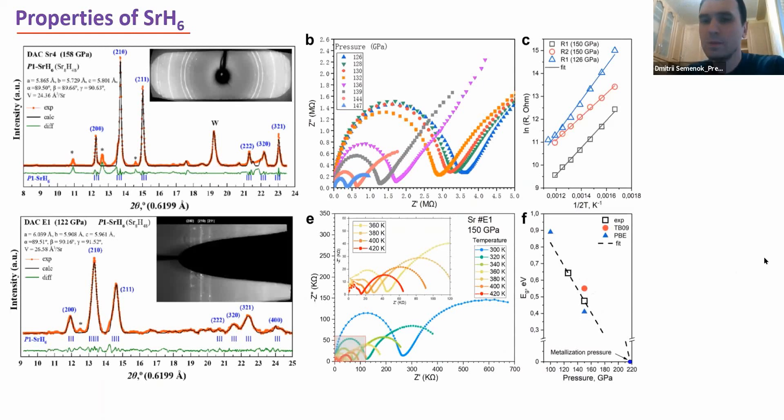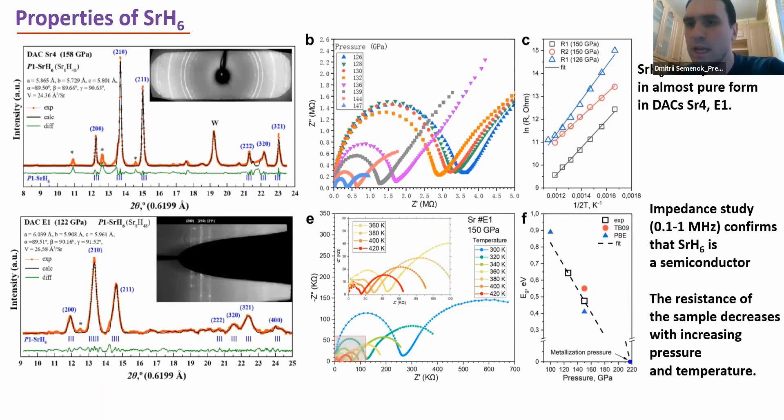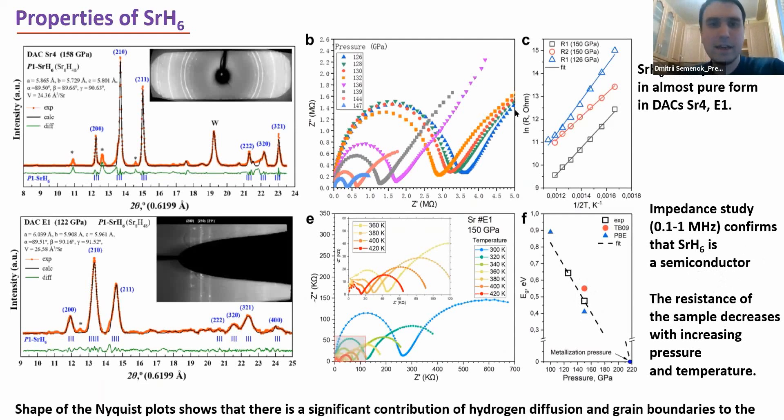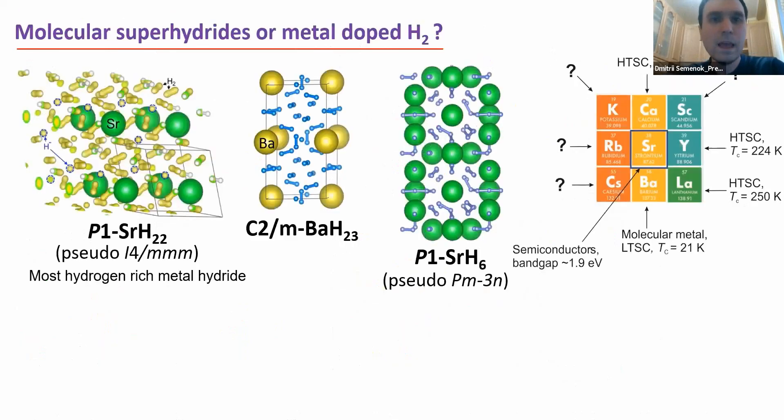The metallization pressure of this compound is about 220 GPa. We synthesized it in pure form. Impedance study confirms that strontium H6 is a semiconductor and the important thing is that the Nyquist plot, several Nyquist plots show that there is a significant contribution of hydrogen diffusion to these Nyquist plots. This compound actually plays a role and we also see signs of electrochemical reactions on electrodes with probably production of hydrogen because it's an ionic conductor. When we apply the voltage, especially low frequency, we can see the formation of even hydrogen in this linear part of Nyquist plots which is typical for lithium ion batteries also.